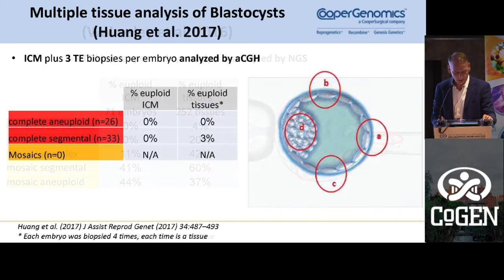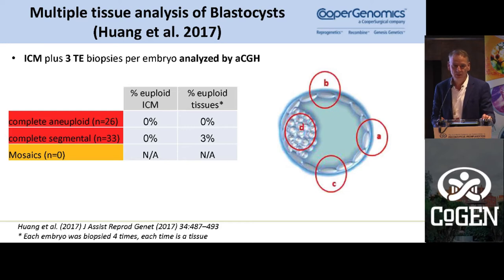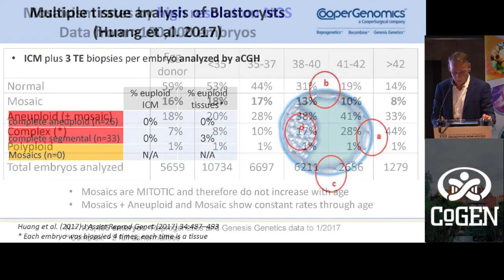Another study by a different group — though they didn't detect mosaics specifically — compared the inner cell mass to the trophectoderm and again found that if the trophectoderm was abnormal, the inner cell mass was always abnormal.